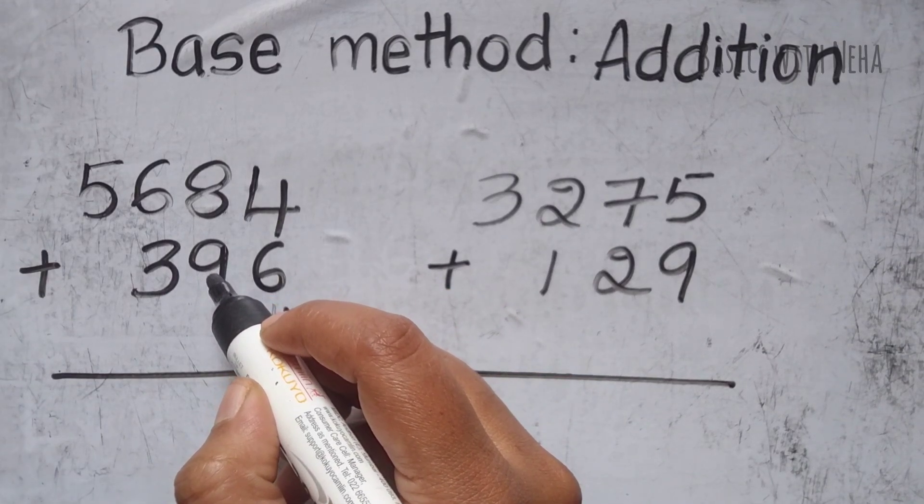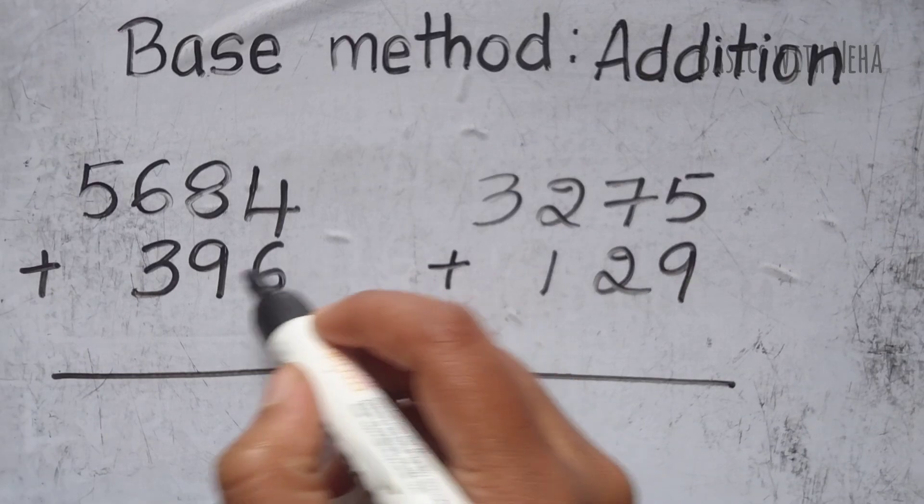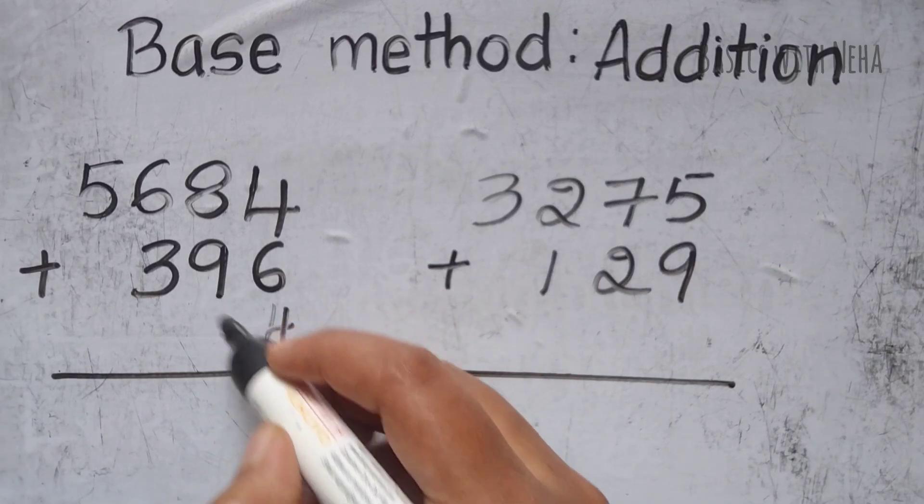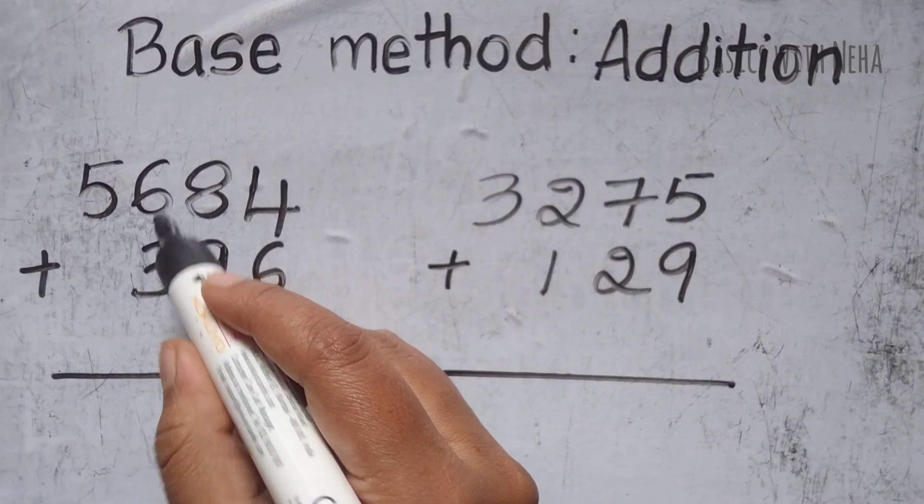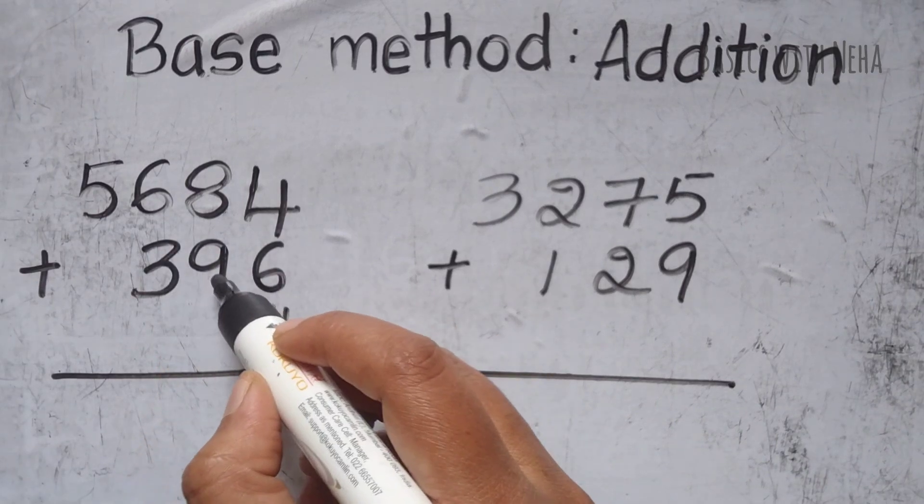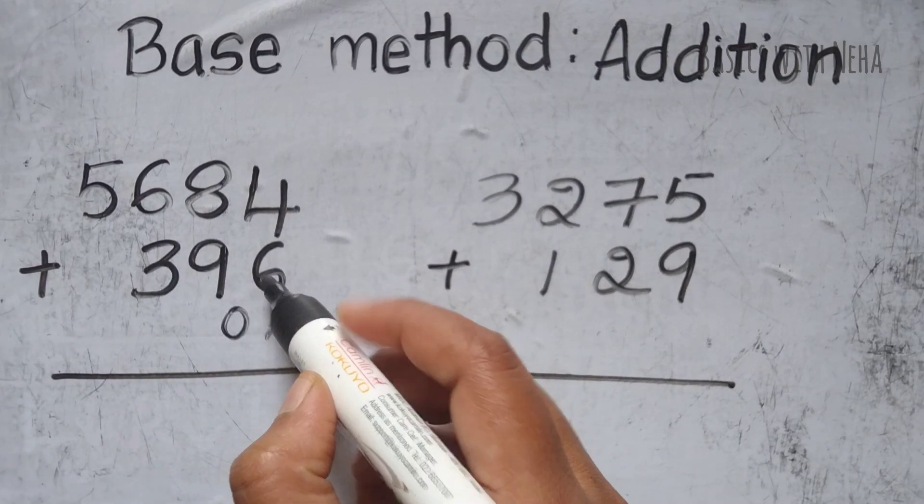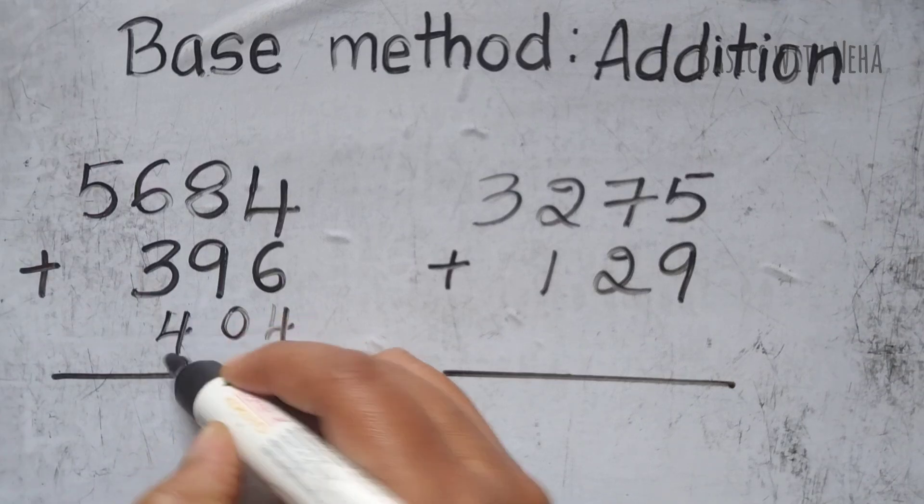Complement of 9 in base 9 because I've already used the complement here. So I have to go to base 9. It'll be 0. And then for this number 396, the nearest base is 400. So I'm going to just take it as 4.